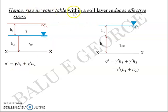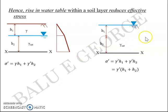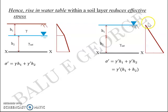The variation of effective stress σ' with depth is shown graphically. In Case 1 (water table at depth h1), there is a bend in the diagram: σ' = 0 at the surface, σ' = γh1 at depth h1, and σ' = γh1 + γ'h2 at depth h1 + h2. In Case 2 (water table at ground level), it is a straight line: σ' = 0 at surface, σ' = γ'h1 at depth h1, and σ' = γ'(h1 + h2) at the full depth.